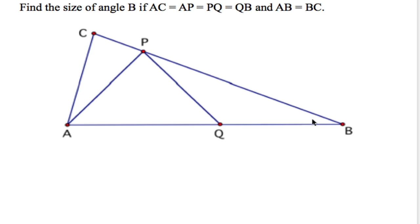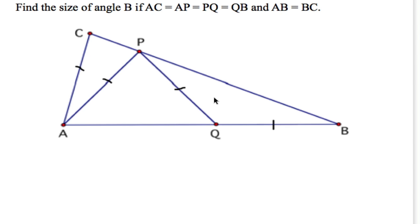So we've got a lot of isosceles triangles here. One, two, three to look at. All different sizes, but all isosceles. Also the big triangle is isosceles.